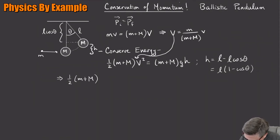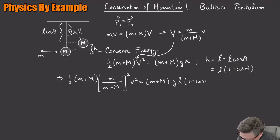little m plus big M and now v squared. So this is going to be a little m over little m plus big M quantity squared times v squared, little v squared. This is going to be a little m plus big M G times L one minus cosine theta.